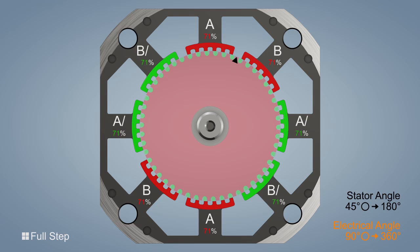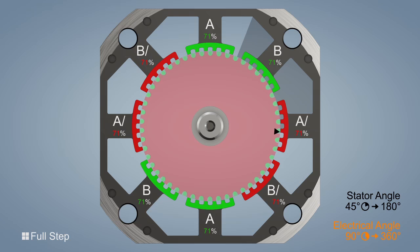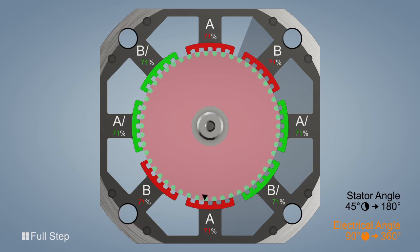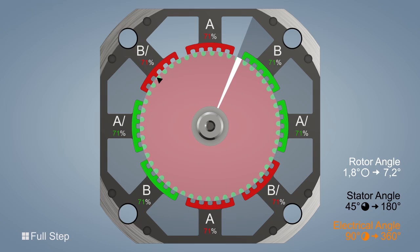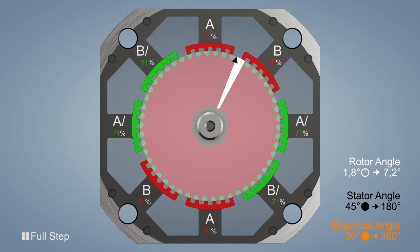The stator field turns mechanically in four steps from the initial position of 0 degrees through 1.8 to 7.2 degrees. One electrical cycle of 360 degrees with four pulses therefore corresponds to a mechanical rotor angle of 7.2 degrees.